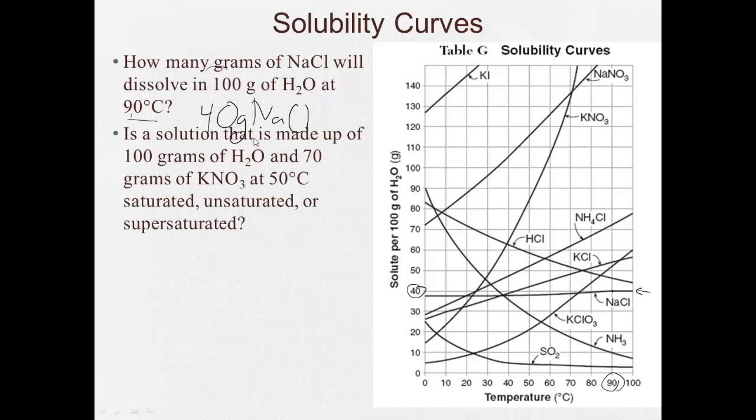All right, next question. This solution is made up of 100 grams of water and 70 grams KNO3 at 50 degrees Celsius, saturated, unsaturated, or supersaturated? So now let's look and see. 70 grams of KNO3 at 50 degrees Celsius. So we find 50 degrees Celsius, go up to 70, and make our mark here. Now it's KNO3. Where's the line for KNO3? Here's the line for KNO3. So what we have to say is this point, above, on, or below the line. If it was above the line, it would be supersaturated. If it's on the line, it would be saturated. If it's below the line, it's unsaturated. Well, we can see, obviously, that it's below the line that makes it unsaturated.